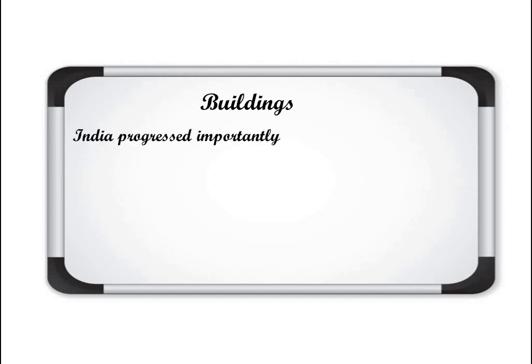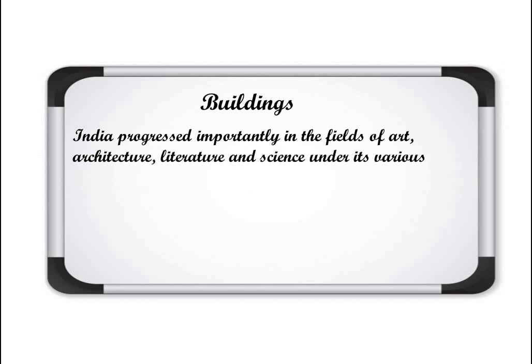India progressed most importantly in the fields of art, architecture, literature and science under its various rulers. Different Indian rulers during their time periods advanced art, architecture, literature and science remarkably. Some rulers were especially interested in art and architecture.